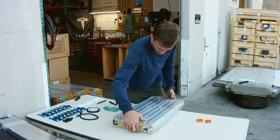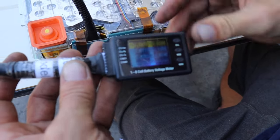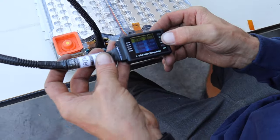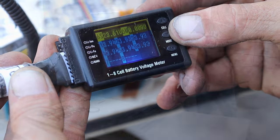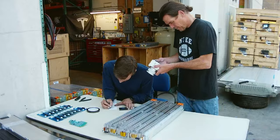From there we test it using the BMS tester to ensure that all cells are reported, and write down the cell voltages on the sticker.